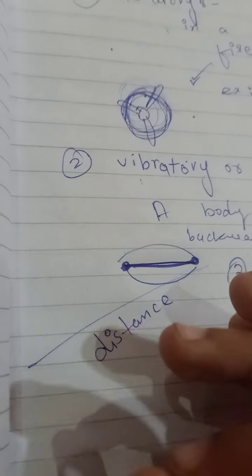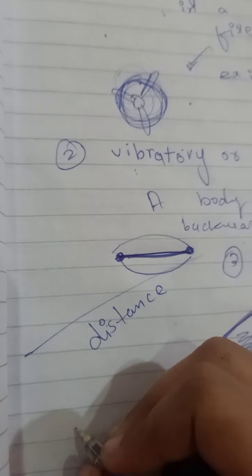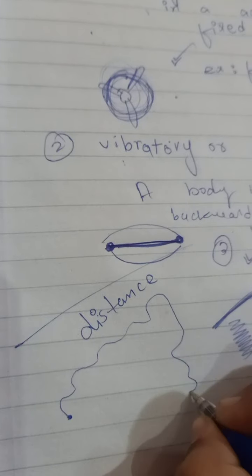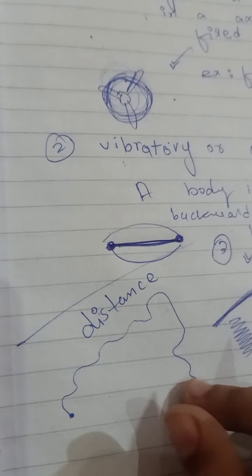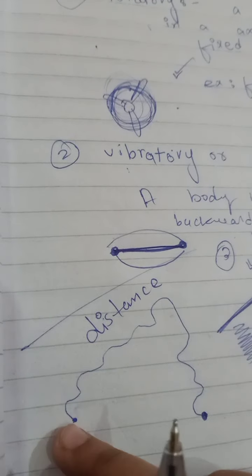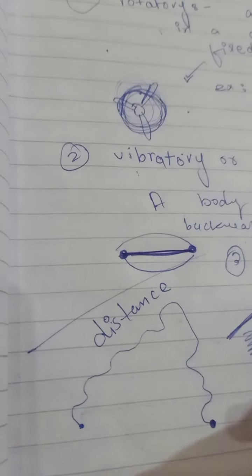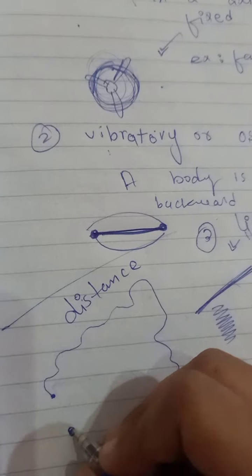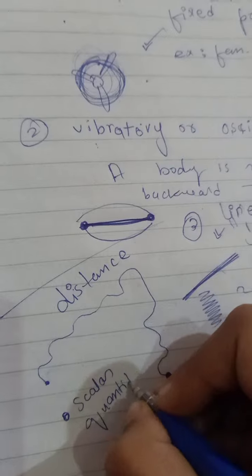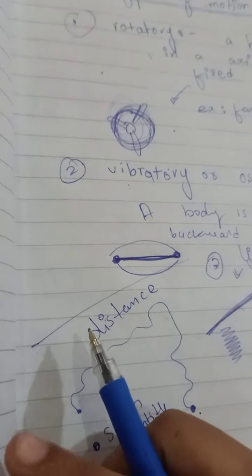Now let's move to the next topic: distance. Distance is the path followed by a body during its motion. If a person is moving from one point to another, the total path covered is the distance. Distance is a scalar quantity.